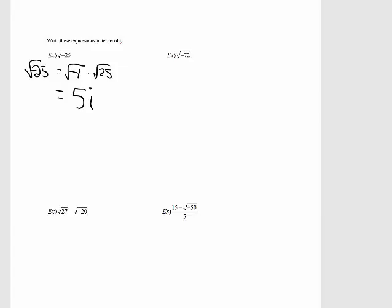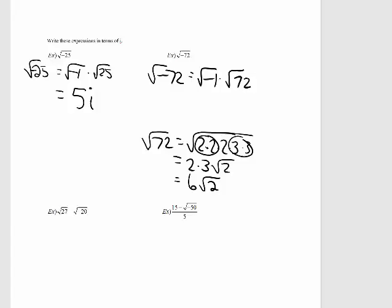I want to write these expressions in terms of i. The square root of negative 25 — I can rewrite that as the square root of negative 1 times the square root of 25. The square root of 25 is 5, and we know the square root of negative 1 is i. So the square root of negative 25 is equal to 5i.